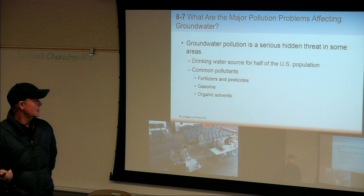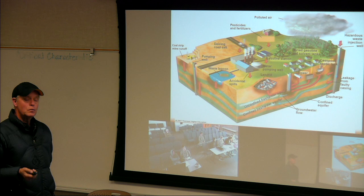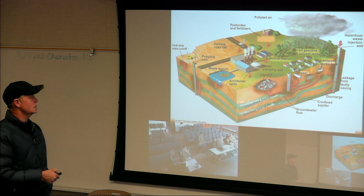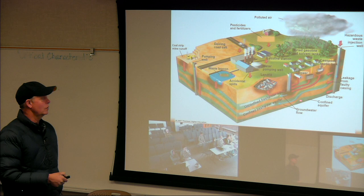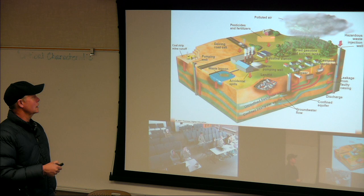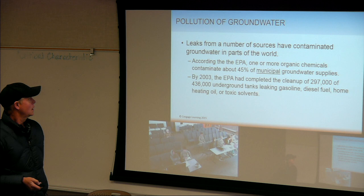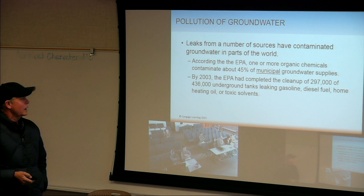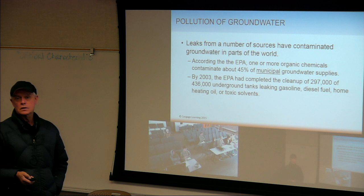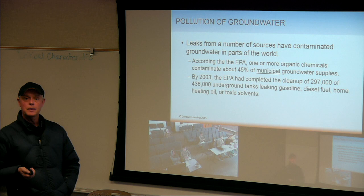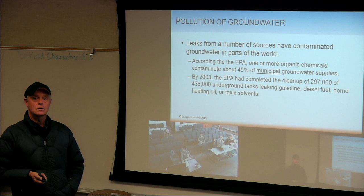Here's a graphic looking at when people are involved — all the different pressures put on our groundwater systems. We'll get to what a confined aquifer versus an unconfined aquifer is later. According to the EPA, one or more organic chemicals contaminate about 45% of municipal groundwater supplies. In LA there are many areas where they just can't use the groundwater because it's too contaminated. We're very fortunate up here that we have some of the best quality groundwater anywhere, but that doesn't mean we need to let our guard down.